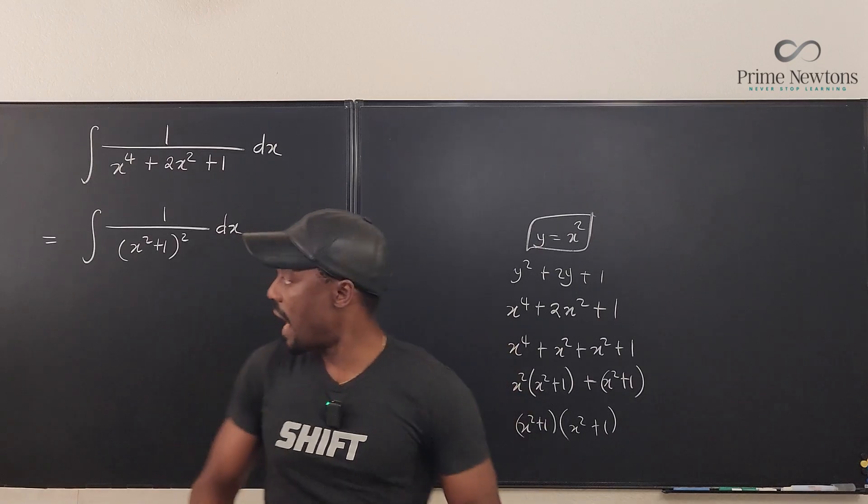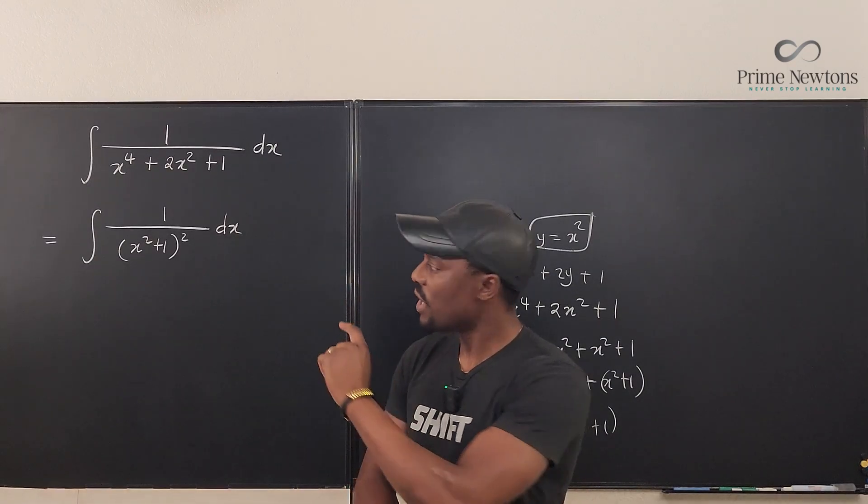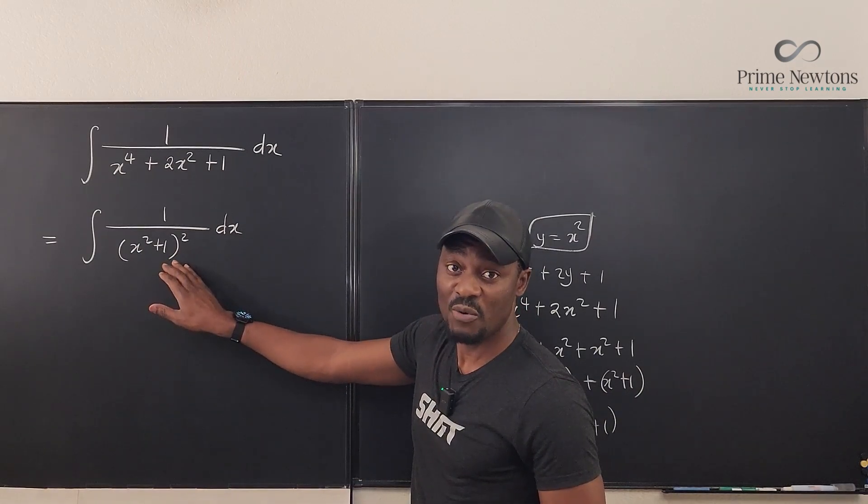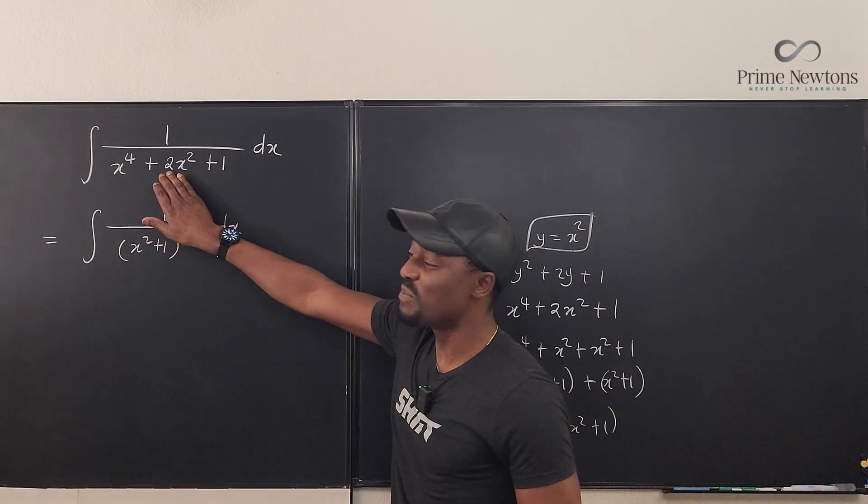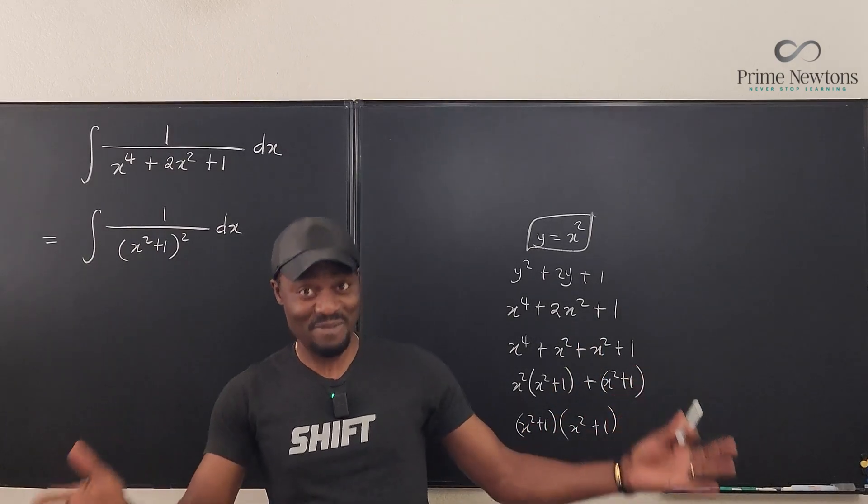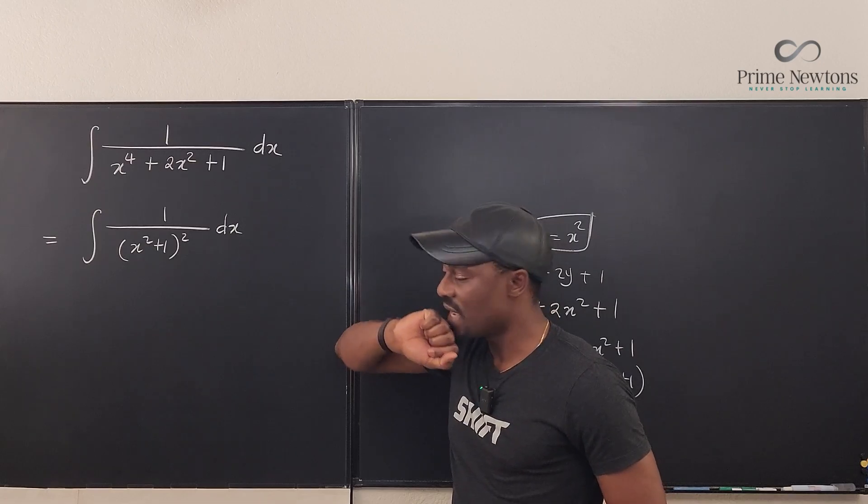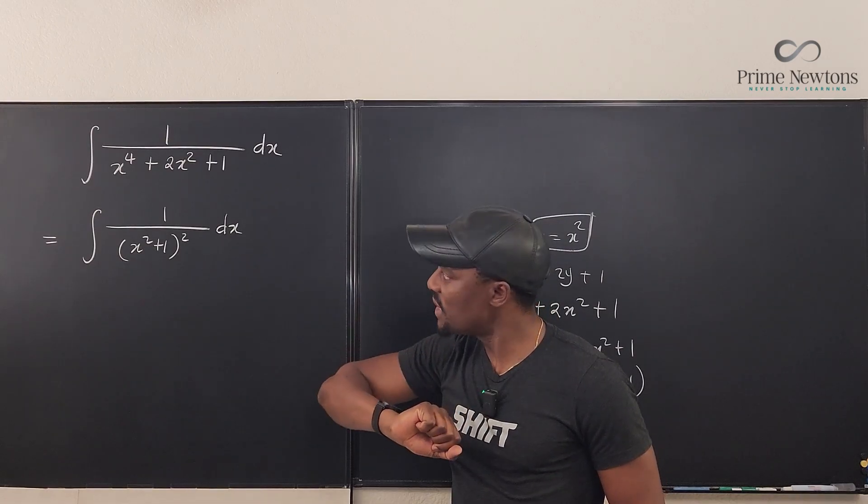Okay, so now this is what we have. If this was the original integral, actually this was the integral I was planning to write, but I decided to make it this way so I can show you that you should look out for factoring. Now if this was the question you were given to integrate, how would you integrate this?